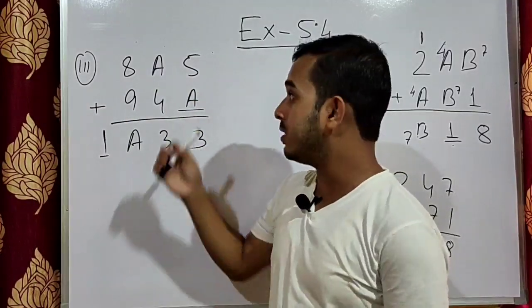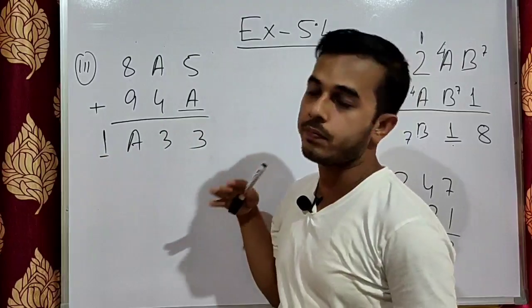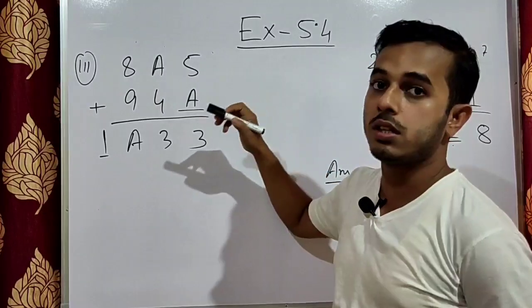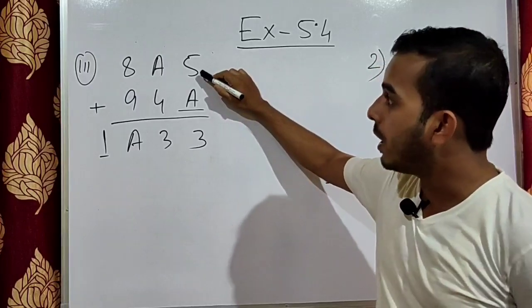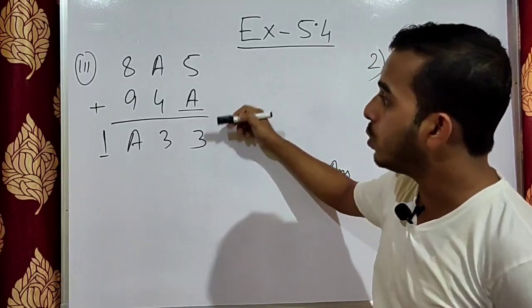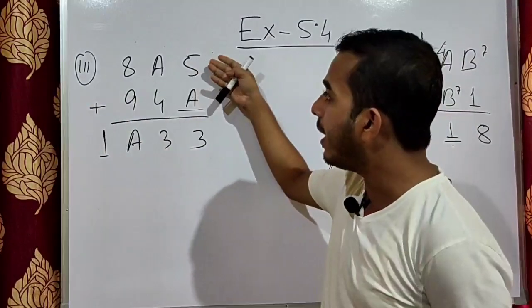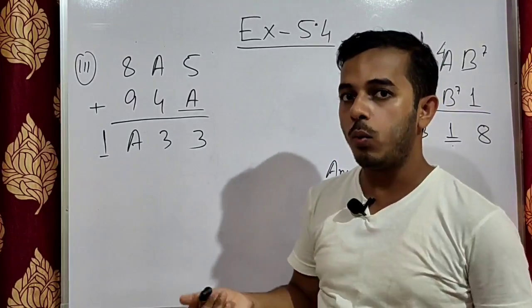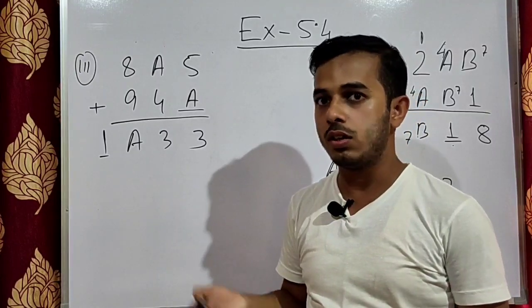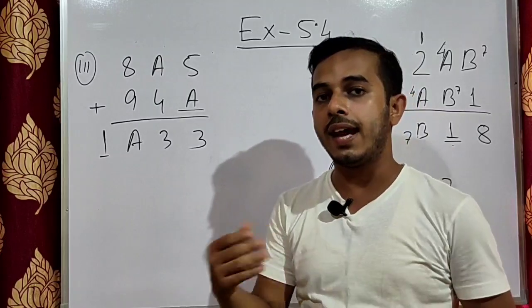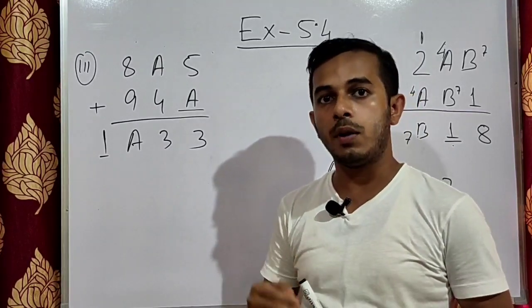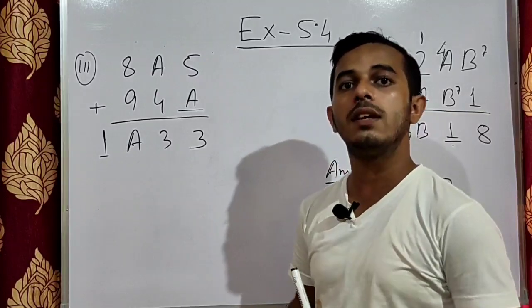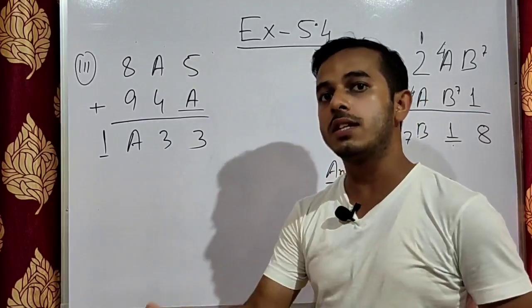We look at the unit digits first: 5 plus A gives a result with unit digit 3. Numbers with unit digit 3 include 3, 13, 23, 33. Since 5 plus any single digit cannot give 3 directly, we look at 13. So 5 plus 8 is 13, giving unit digit 3 with carry 1. Therefore A equals 8.